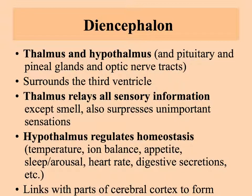The diencephalon is composed of the thalamus and hypothalamus, located in the central part of the brain, surrounding the third ventricle. The thalamus is involved in relaying all sensory information to the part of the brain that will analyze it. It also suppresses unimportant sensations — for example, if you wear a watch, your thalamus has discounted the feeling of it on your wrist as unimportant. The thalamus also helps you focus by tuning out distractions so you can concentrate on reading or a particular task.